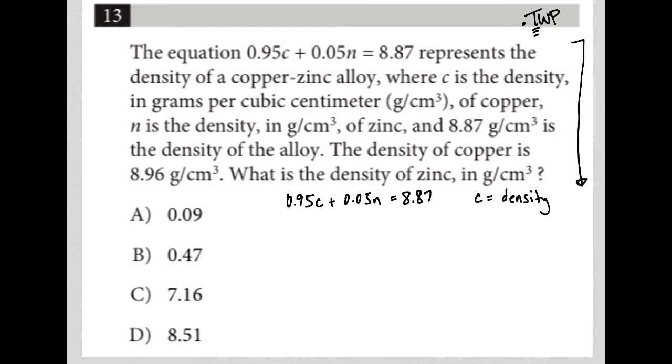N is the density. Oh, so this is density copper. And that makes sense. N equals density zinc. And 8.87 grams per cubic centimeter is the density of the alloy.